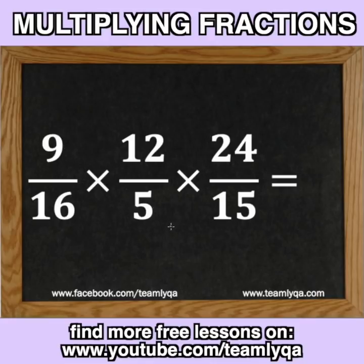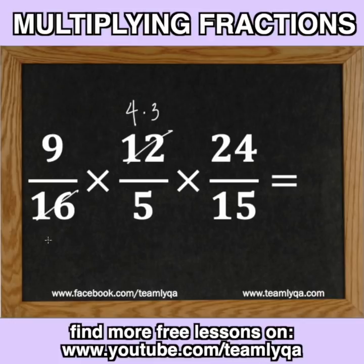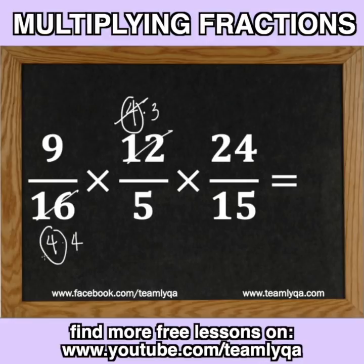So, all you need to do is find pairs of factors among the numbers on top and on the bottom. What do I mean by that? Just by looking at it, you can see that 12 is the same as 4 times 3, and 16 is the same as 4 times 4. Now, because 4 appears on top and also on the bottom, that's equal to 4 divided by 4, or 1 — so you can cancel it out.